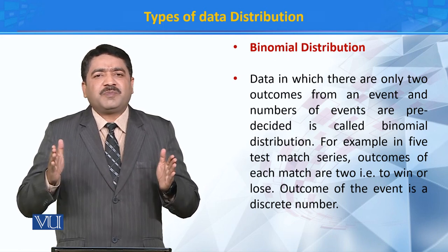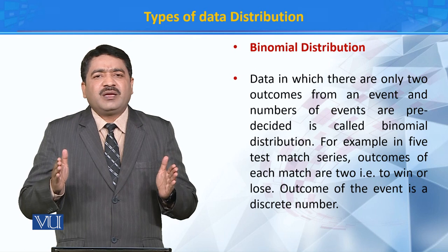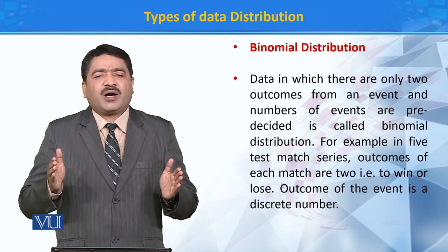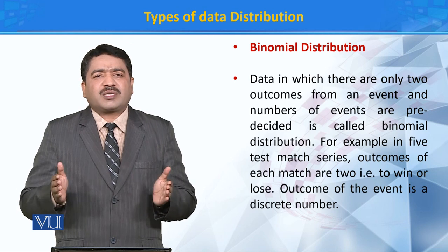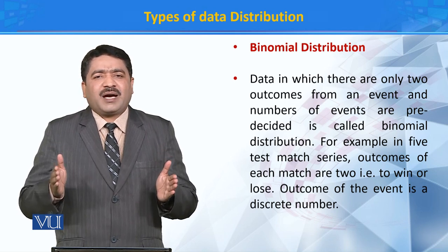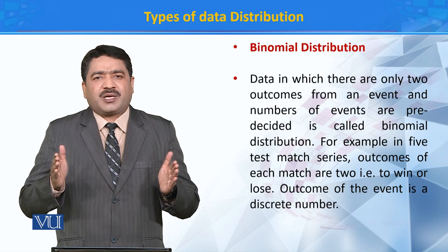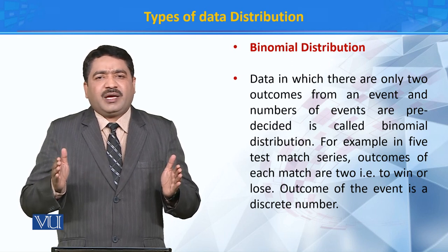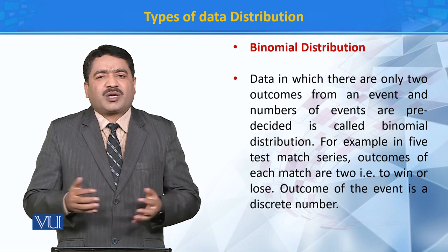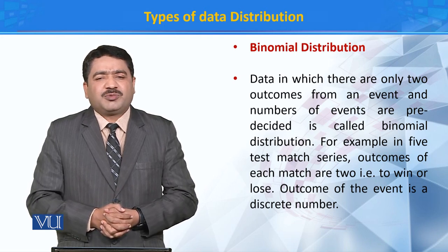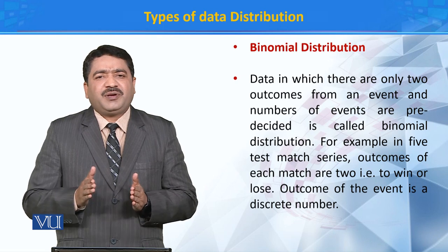For example, हमने कहा कि 5 matchों की series, تو ये پہلے سے decided है کہ 5 match کھیلے جائیں گے. لیکن ہر match کا جو outcome ہوگا وہ different ہوگا — یا ہار ہوگی یا جیت. اسی طرح اگر ہم ایک coin toss کریں تو head بھی آ سکتا ہے، tail بھی آ سکتا ہے. تو اس کسم کی distribution جس کے اندر data کی دو possible outcomes ہوں اسکو binomial distribution کہتے ہیں اور اس میں number of events پہلے سے predetermined ہوتے ہیں.